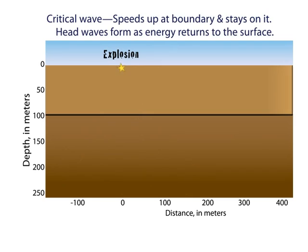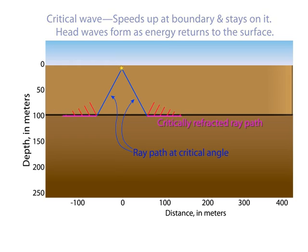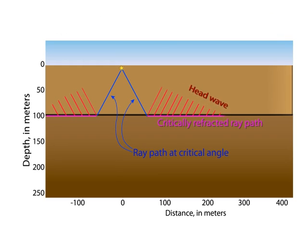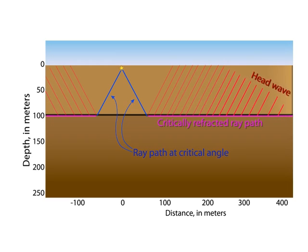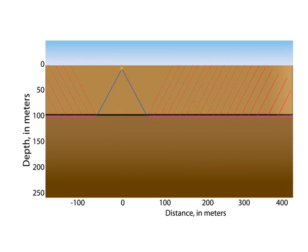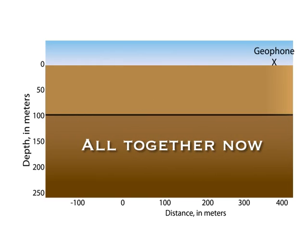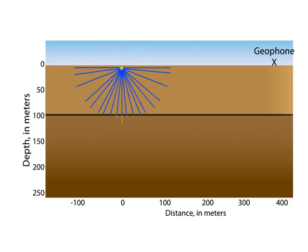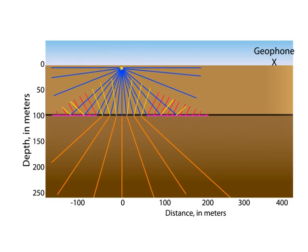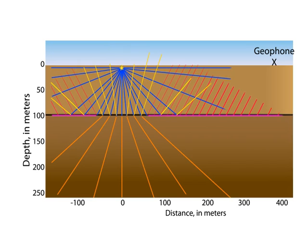The critical angle marks the angle where the wave is refracted parallel to the boundary, and travels along the upper surface of the fast layer while sending a series of rays, known collectively as the head wave, back to the surface at the angle of the initial direct wave. When we look at all the waves, we see that a wave traveling along the critical ray path can actually reach a geophone before a direct wave traveling a shorter path in the slower layer.